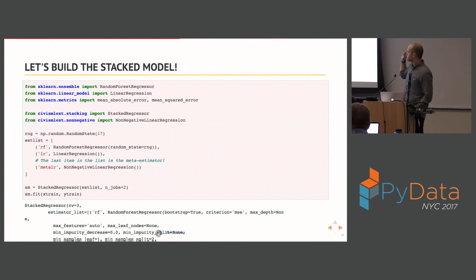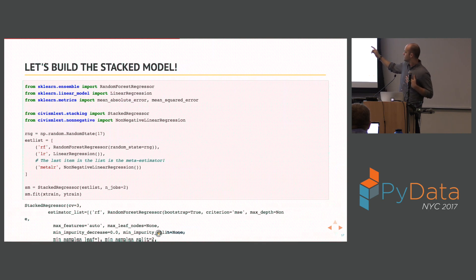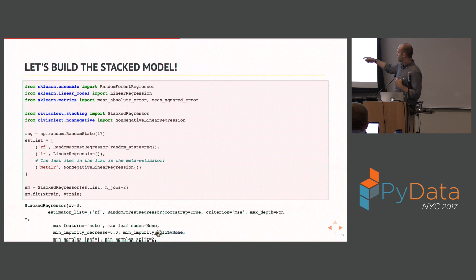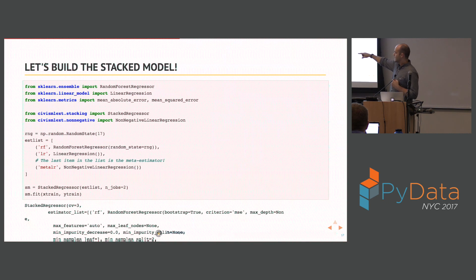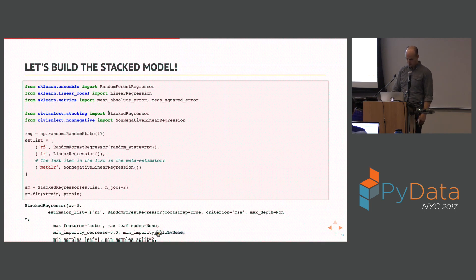Just like in the pipeline class, we pass a list of named tuples to the constructor — that's how we create our stack model. The first entry in each tuple is a string identifying the predictor, and the second entry is the instantiated predictor. The important thing to know is that the last item in your list is your meta-estimator. So I make the estimator list — random forest regressor, linear regression, then the non-negative linear regression as meta-estimator — plug it into the StackRegressor, and call fit because it is scikit-learn compatible.